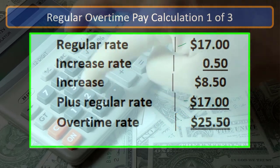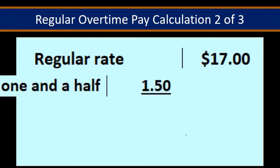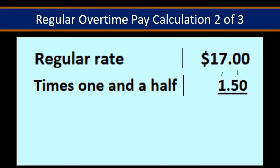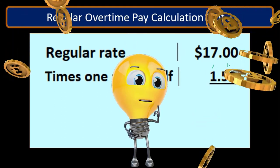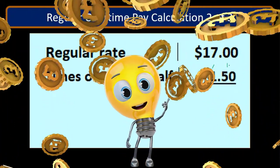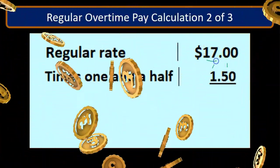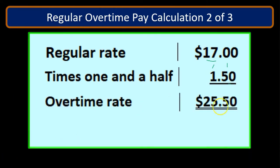We can do this more quickly by taking the $17 original pay and multiplying it times 1.5 — time and a half means 100% plus another 50%, which is 150% or 1.5. So multiplying $17 times 1.5 gives us the same $25.50. This is the faster calculation, similar to how you might multiply by 1.2 for a 20% tip rather than adding the tip separately.